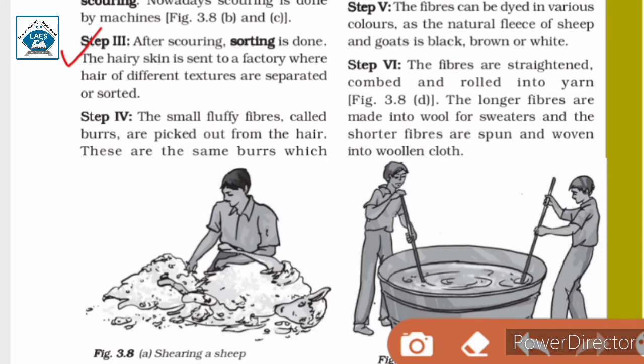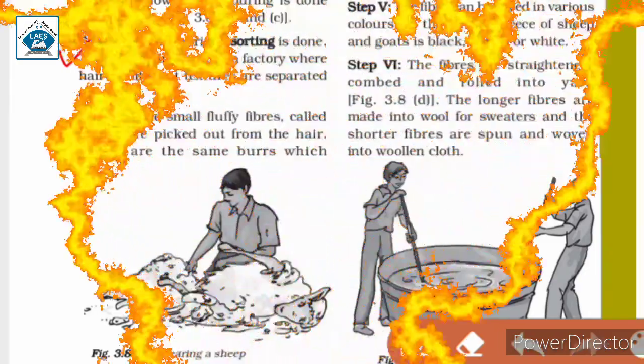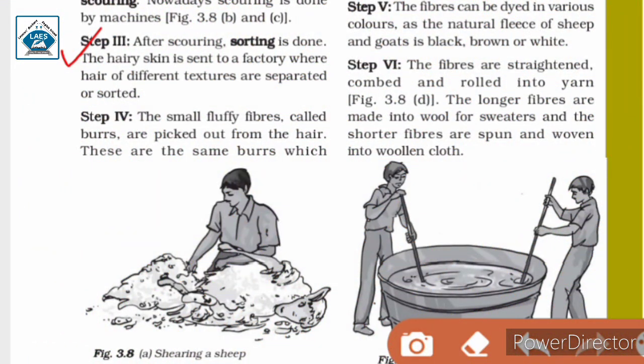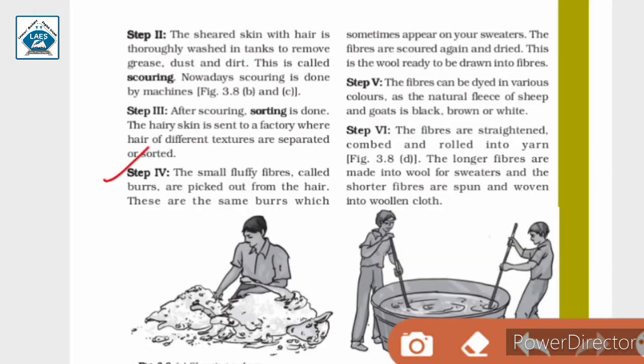Step 3: After scouring, sorting is done. The hairy skin is sent to a factory where hair of different textures are separated or sorted. The hair is sorted depending on the different textures.